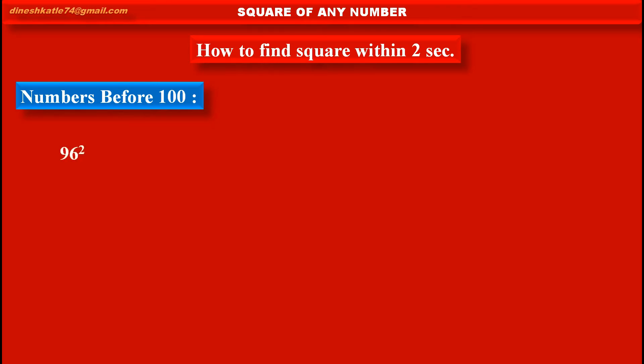First, we have to find square of 96. We have to solve this in two parts. As we know, 96 is 4 less than 100. So, in first part, we have to write 96 minus 4, as 4 is the difference between 96 and 100.